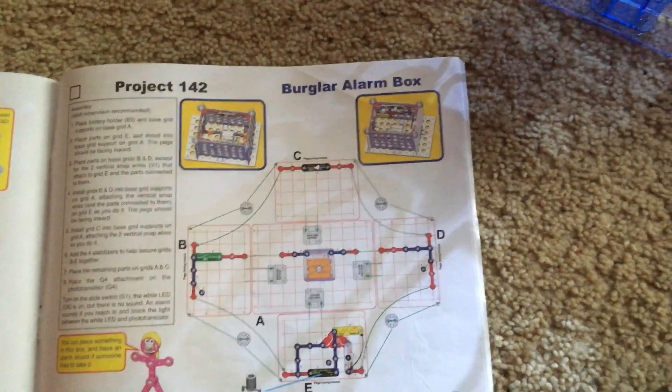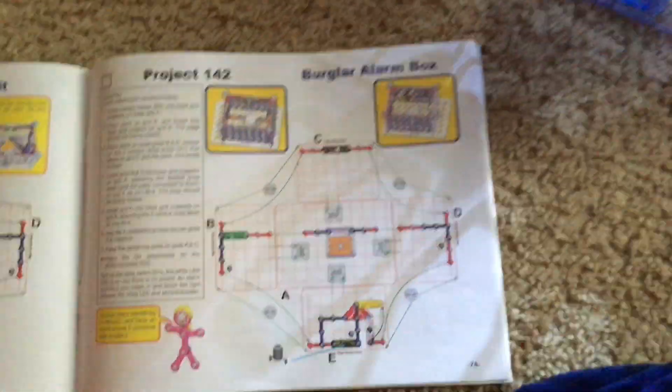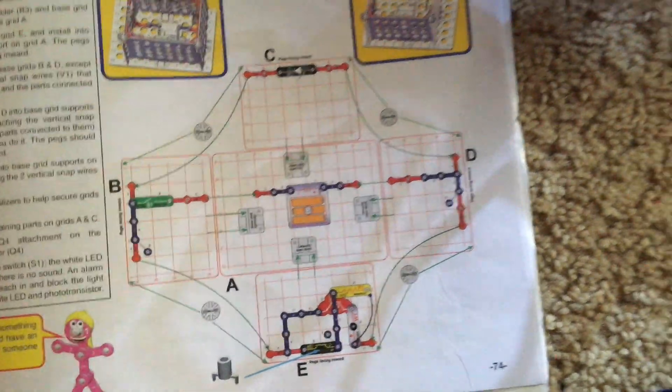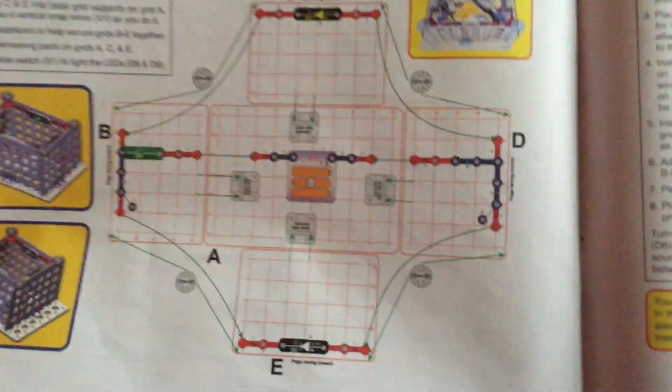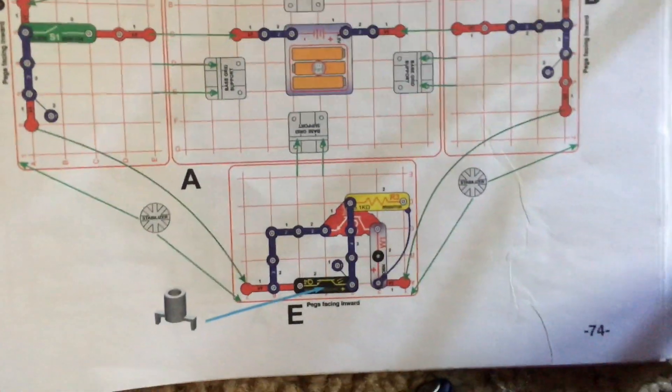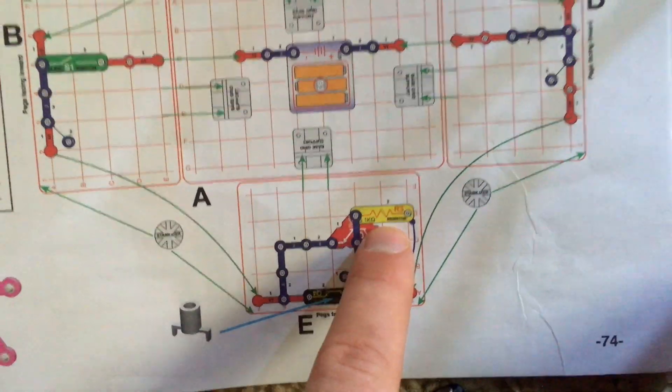Project 142, burglar alarm box. We will build this circuit using all four base grids. It looks very similar to the previous one, but we included more components including the photo transistor and horn.